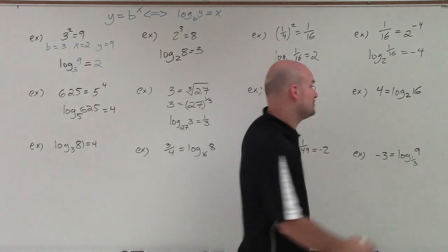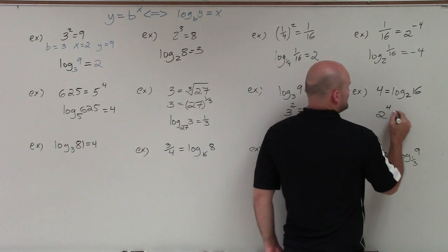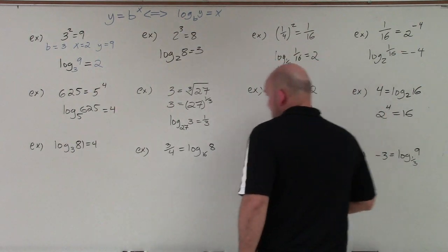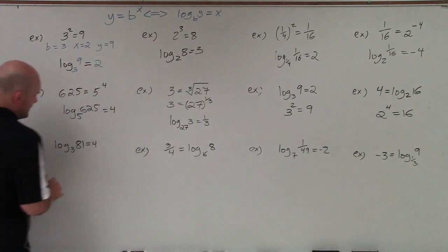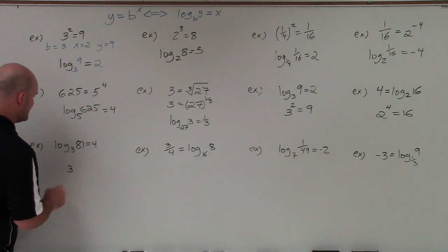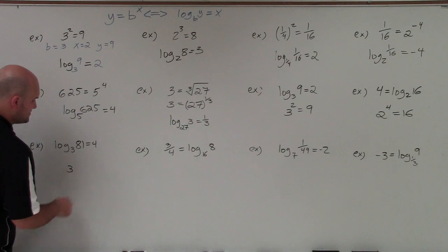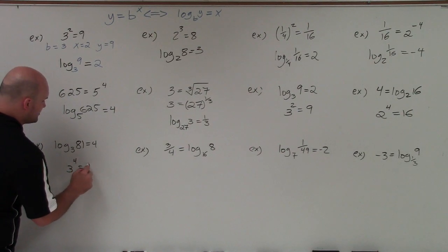Over here, my base of my logarithm is 2. So that's going to be 2 to the 4th power equals 16. Over here, I have 3... my base of my logarithm is 3. So that's going to be the base of my exponent. 3 to the 4th power equals 81.